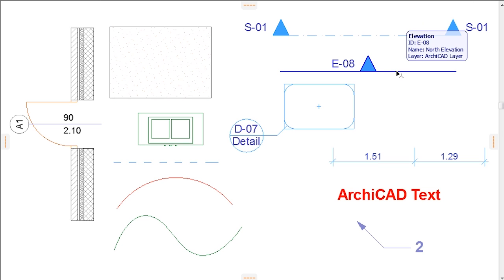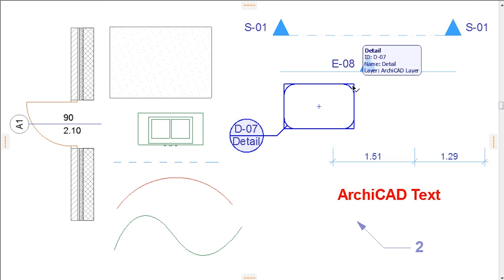When you hold your cursor over any node or edge of such elements, no highlight is created, regardless of how long the cursor stays over them.